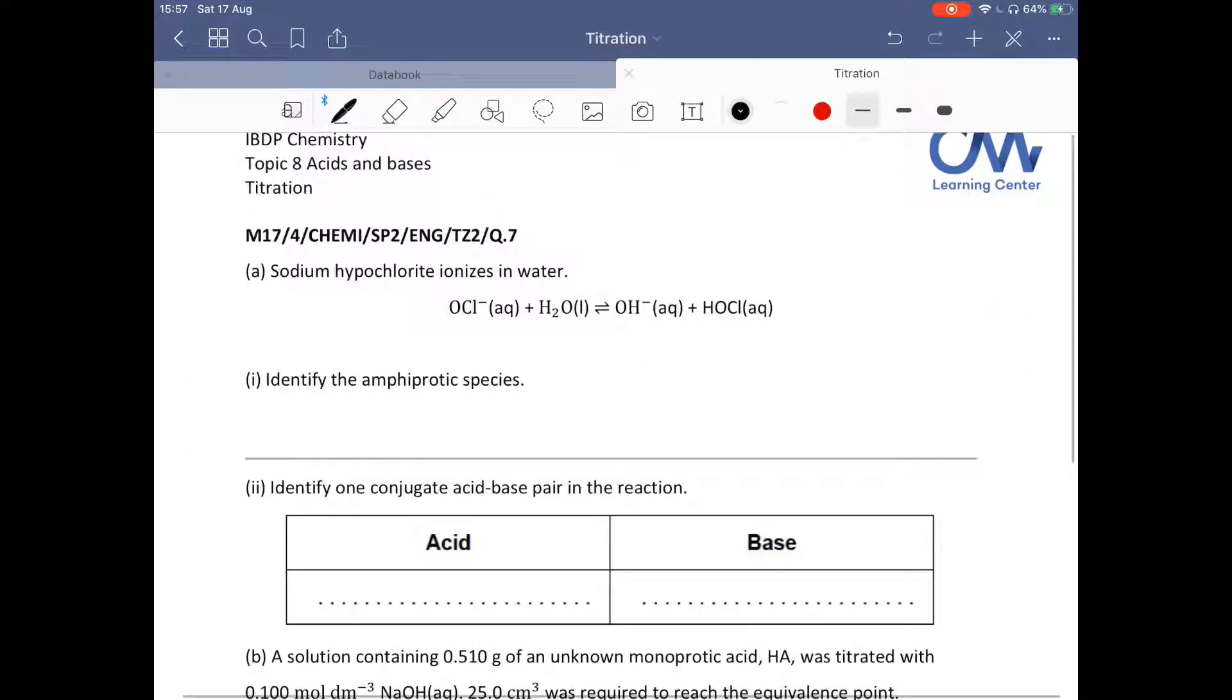Part A. Sodium hypochlorite ionizes in water. Let's look at this equation, this chemical equilibrium. The hypochlorite ion is accepting a hydrogen ion from water. So hypochlorite ion is a Bronsted-Lowry base, it's a proton acceptor, and water is a Bronsted-Lowry acid, it's a proton donor.